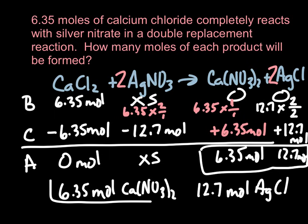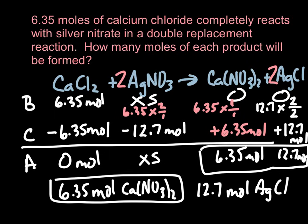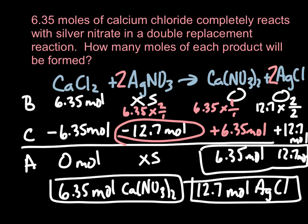I could ask all kinds of other questions from this table. For example, how much silver nitrate would be used? The change in silver nitrate was 12.7 moles — that's the kind of thing you need to know. These are the basics of the BCA table, so make sure you're practicing with them. Have a great day.